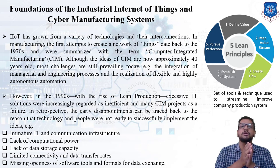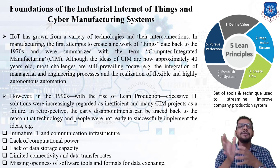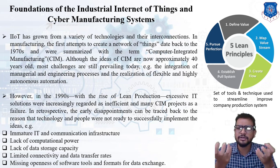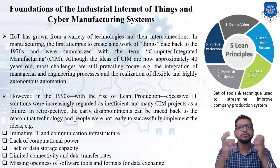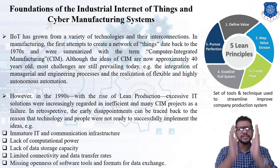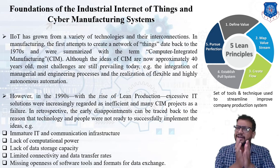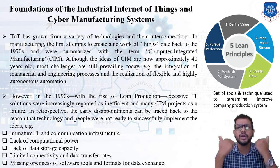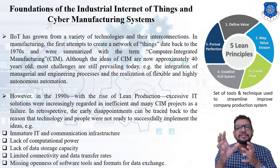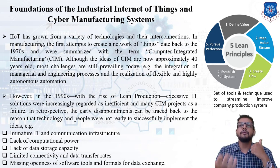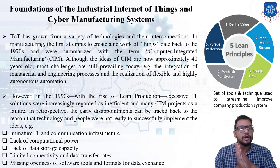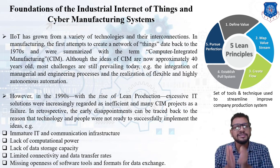However, in the 90s, with the rise of lean production — which is a fixed set of tools and techniques used to streamline and improve the company's production system — a fixed process was followed by industry to cut down losses, reduce time, and improve quality. There are five lean principles: define the values, map the value stream, create a flow, establish a pull system, and pursue perfection.